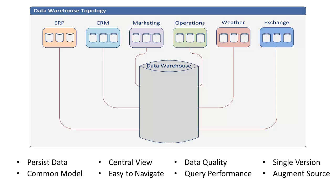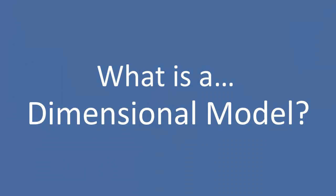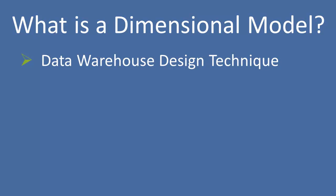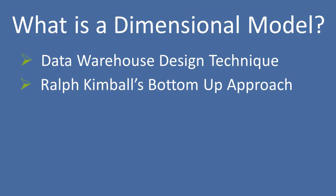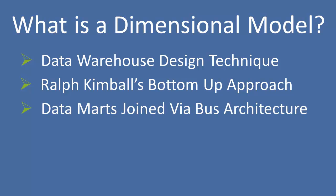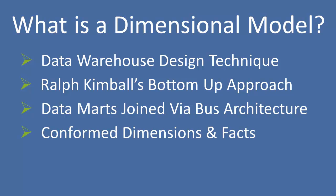Augmenting the source systems is another role for the data warehouse. Our CRM system, for example, may need data that's actually derived in the operational systems — we can easily accomplish this by going through the data warehouse to move that data to the CRM system. So that's what a data warehouse is and why we're creating it. Back to the focus of this video series: what is a dimensional model? A dimensional model is a data warehouse design technique.